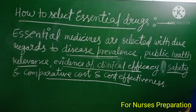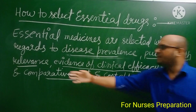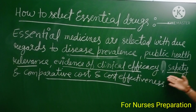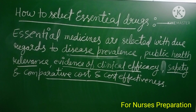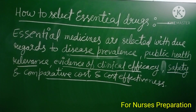In this video we are considering the criteria available on the WHO website. Essential medicines are selected with due regards to disease prevalence, public health relevance, evidence of clinical efficacy, safety, and comparative cost and cost-effectiveness.